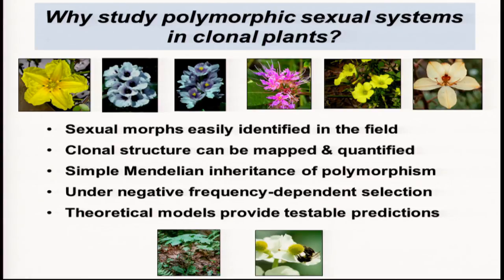All of the images across the top are different species with these sexual polymorphisms — all what are called heterostylous species. They have different length sex organs. You may know the classical primrose story developed by Darwin — it's one of the classic examples of a supergene and a linkage group controlling a co-adaptive set of genes. Heterostyly is maintained in populations by negative frequency-dependent selection.